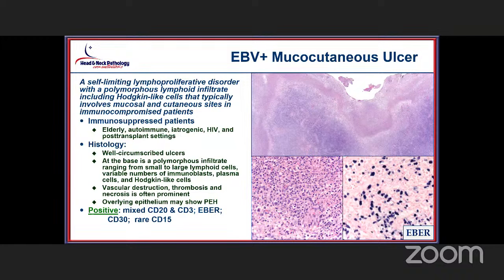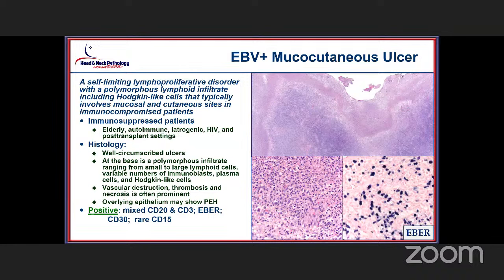The EBV-positive mucocutaneous ulcer is a self-limiting lymphoproliferative disorder with a very polymorphic appearance, including Hodgkin's-like cells where you can almost have Reed-Sternberg-like cells. In general it occurs in someone with some sort of immunocompromise — autoimmune, post-transplant setting, or even in the elderly. It is usually a well-defined ulcer with the base having large lymphoid cells with immunoblasts and Hodgkin-like cells, positive with EBER. Sometimes positive with CD30 and rarely CD15 — so they can look quite ominous, but the clinical setting helps you reach the correct interpretation.